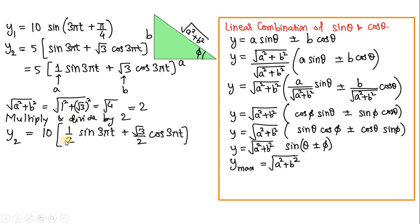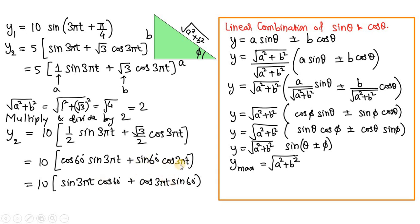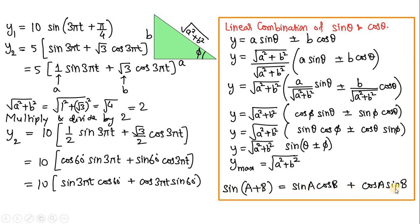We recognize that 1/2 and √3/2 are standard trigonometric values for 60°: 1/2 = cos 60° and √3/2 = sin 60°. Substituting, the bracket becomes sin(3πt)·cos 60° + cos(3πt)·sin 60°, which matches the identity sin A cos B + cos A sin B = sin(A+B). Therefore this simplifies to sin(3πt + 60°).